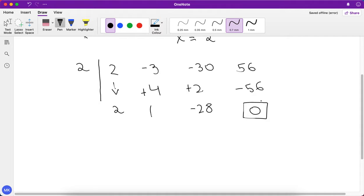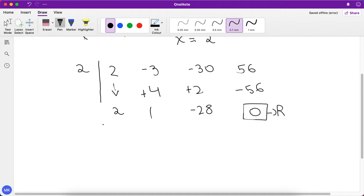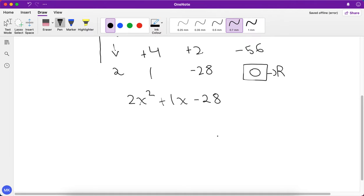So if you get this final value as 0, which is the remainder, it means this shows that you've done it correctly. So now you take these values and you can write it as 2x² + 1x - 28. So this is the quadratic equation.